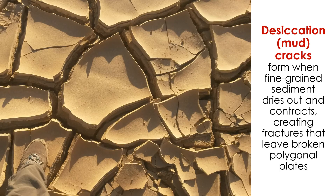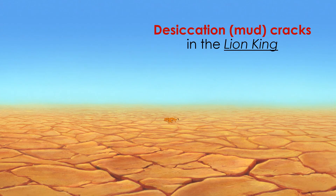Of course, there are many other sedimentary structures that aren't produced by wind or water currents. Desiccation cracks, or mud cracks, form when fine-grained sediment dries out and contracts, creating fractures. Due to this fracturing, the sediment ends up looking like broken polygonal plates. The spaces between these plates may be filled with other sediment or minerals, preserving the mud cracks in sedimentary rock strata. You've probably seen mud cracks before — they aren't uncommon in the summer months, and many films and cartoons use desiccation cracks to depict hot, dry conditions.